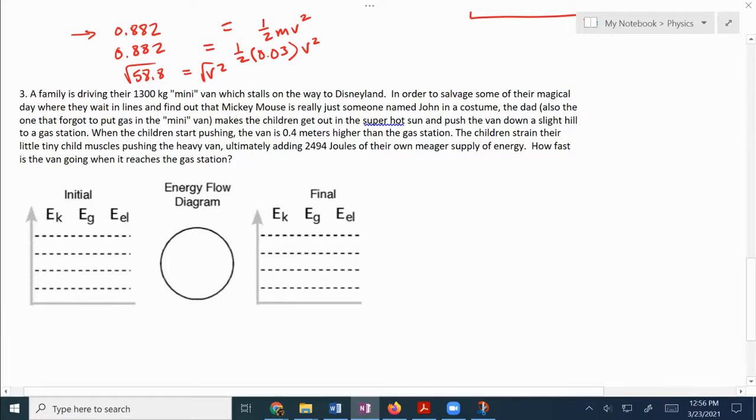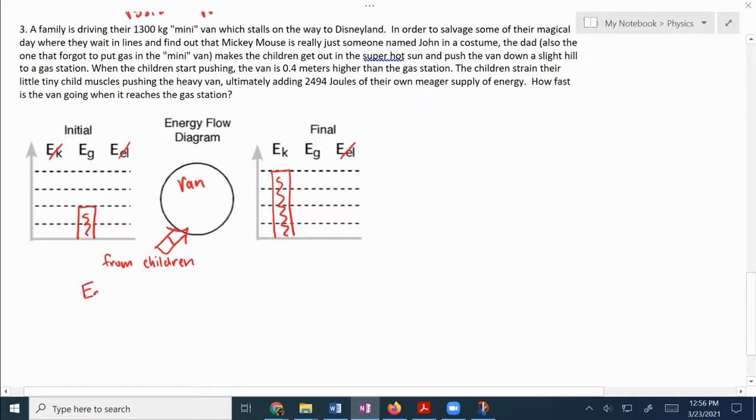So let's think here when they start out, the van is out of gas, so it's not moving. There are no springs anywhere in this whole situation. So it's got some gravitational energy here. Let's put the van in the system there. The children, they're adding their own energy here, right? So they're adding some energy, we'll just say from children. And it doesn't say anything about friction, so let's assume that no friction and all of that turns into kinetic energy at the end, right, when they reach the gas station. So to write the equation for that is just going to be gravitational energy plus the work from the children is equal to the kinetic energy. So mgh plus work from the children is equal to one half mv squared. Fill out the things that we know here.